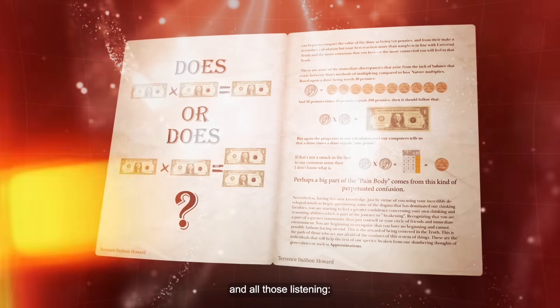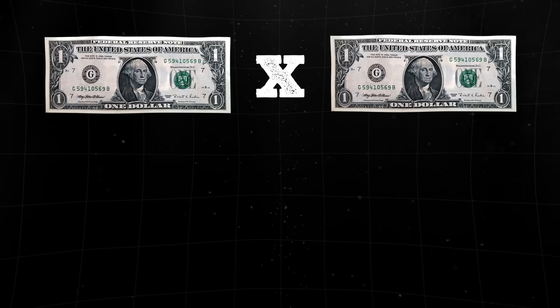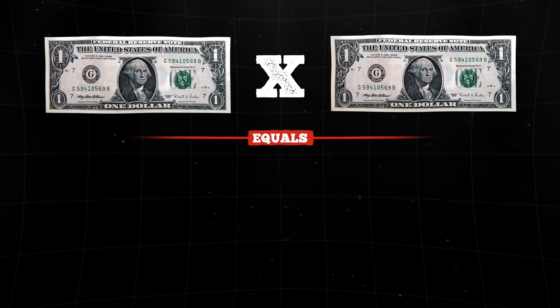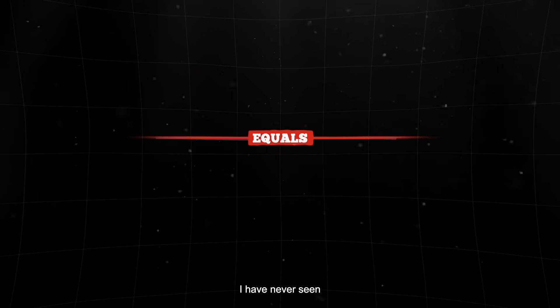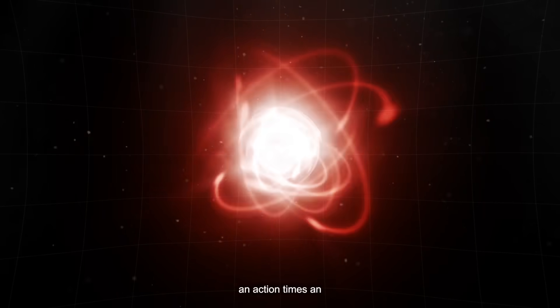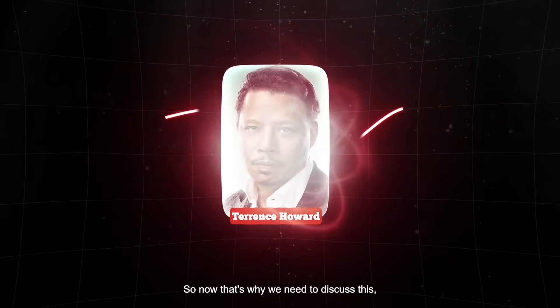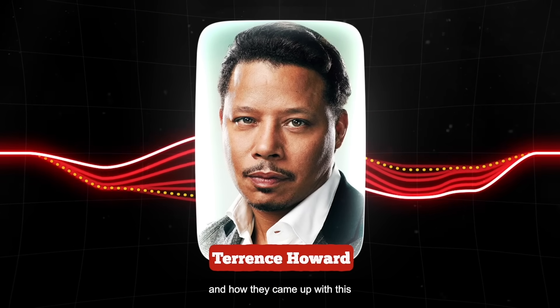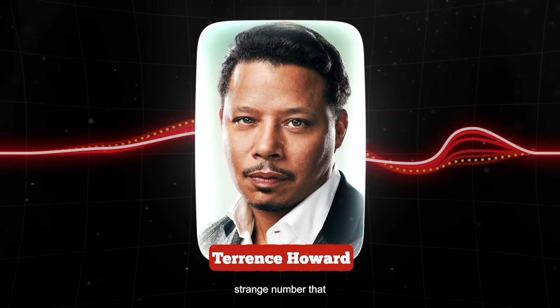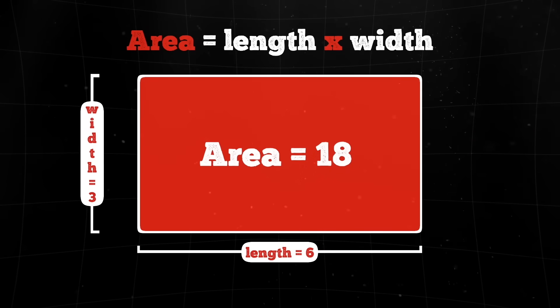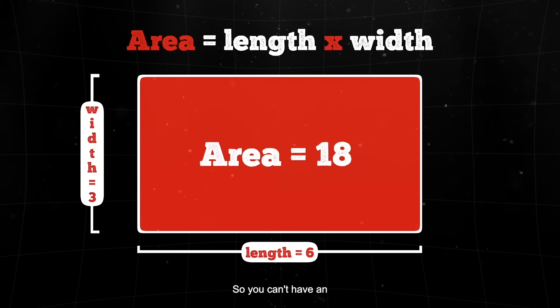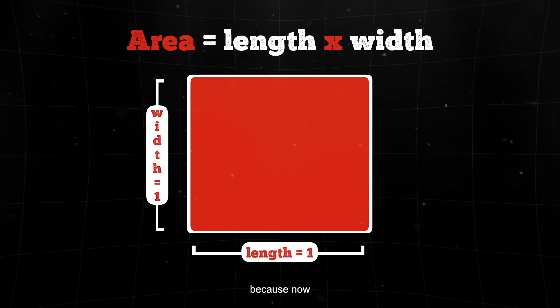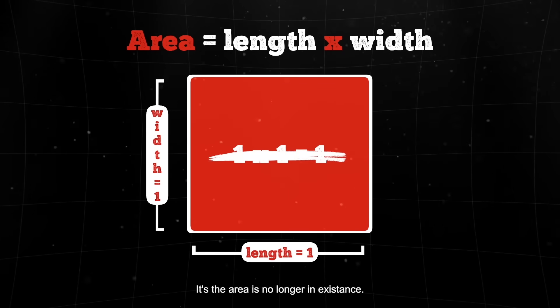I have never seen anywhere in the universe where an action times an action doesn't have a reaction. An area, a length times a length has to have an area. So you can't have a one times one equaling one because now what happened to the length times a length is the area is no longer in existence.